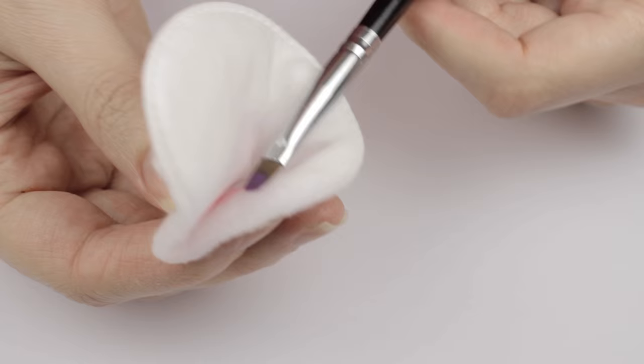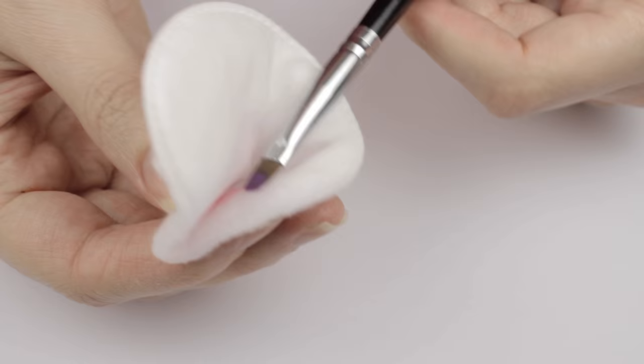This is a much better way to clean your brushes than swirling them in a cap full of acetone because that can break down the glue bond between the bristles and the wooden handle.